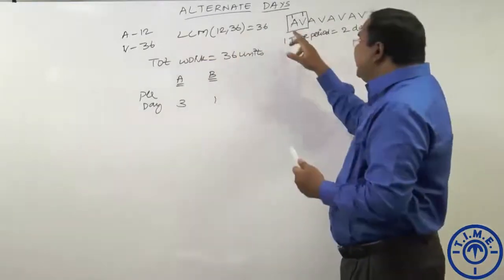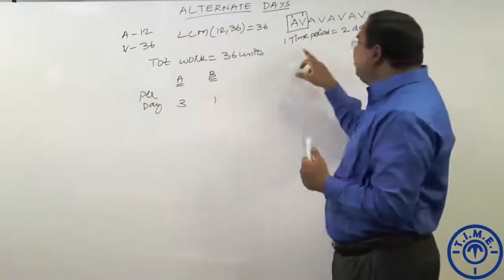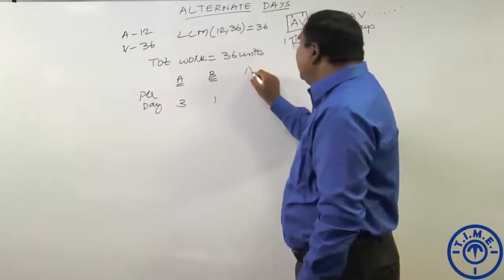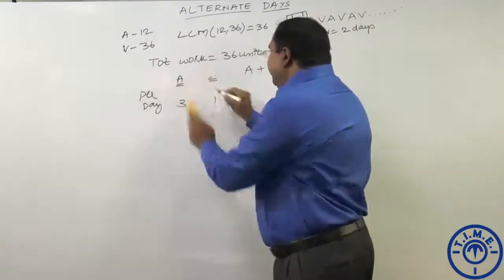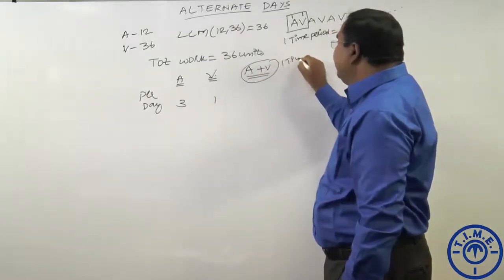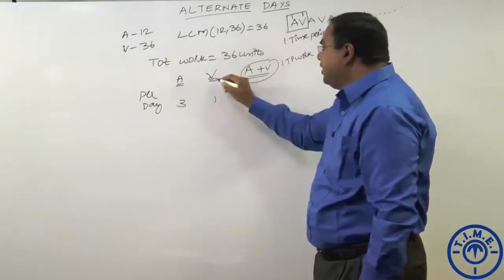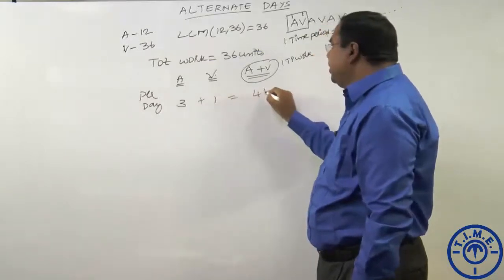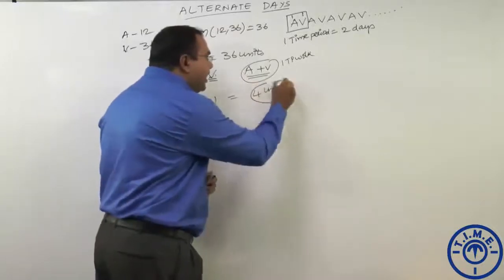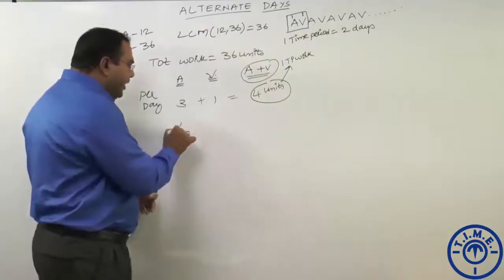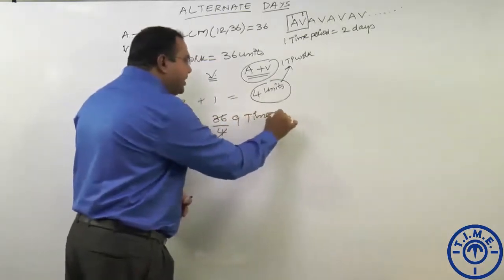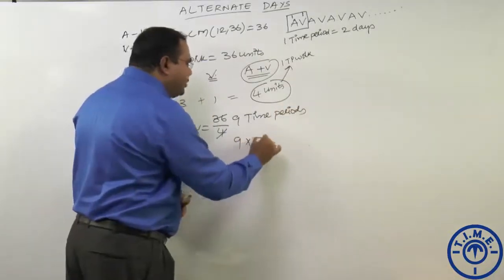Consider Arun and Vinay as one time period: Arun working for one day plus Vinay working for one day equals two days. In one time period, Arun does 3 units and Vinay does 1 unit, so together they do 4 units. Note that these 4 units are not their per-day work — they complete 4 units per time period. Total work is 36 units, so 36 ÷ 4 = 9 time periods. Each time period is two days, so total = 9 × 2 = 18 days.